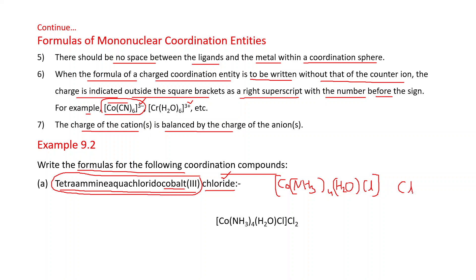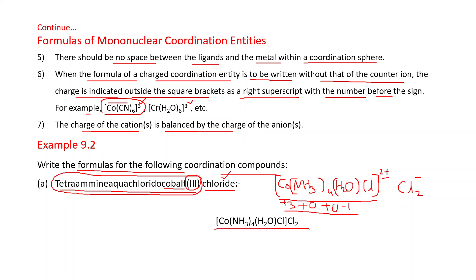Now we balance the charge. Cobalt has oxidation state +3. Ammonia is neutral (charge = 0). Water is neutral (charge = 0). Chlorido ligand is negatively charged: −1. The net charge on the coordination entity is: +3 + 0 + 0 + (−1) = +2. The counter ion chloride has a charge of −1. To balance the +2 charge, we need 2 chloride ions. Therefore, the final formula is [Co(NH3)4(H2O)Cl]Cl2.